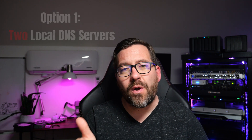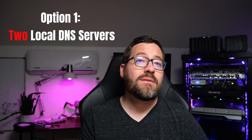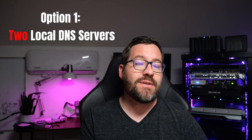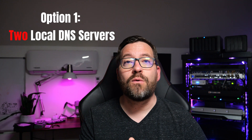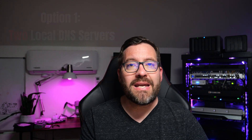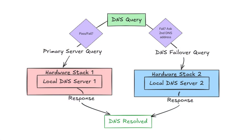Let's take a look at a few configurations to have multiple resolvers in your home lab network. Option one — what I think is the most straightforward and probably the most desirable — is having two local DNS servers. This is the most basic setup, with two DNS servers inside of your home lab. With this, you think about the design and separate those DNS servers across virtual hosts or bare metal hosts, such as Proxmox or VMware, spreading them across different environments.